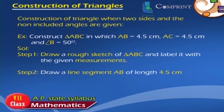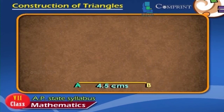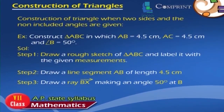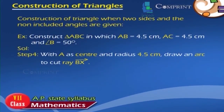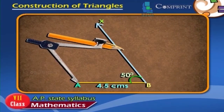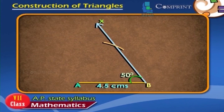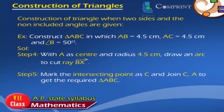Step 2: Draw a line segment AB of length 4.5 cm. Step 3: Draw a ray BX making an angle of 50 degrees at B. Step 4: With A as center and radius 4.5 cm, draw an arc to cut ray BX. Step 5: Mark the intersecting point as C and join CA to get the required triangle ABC.